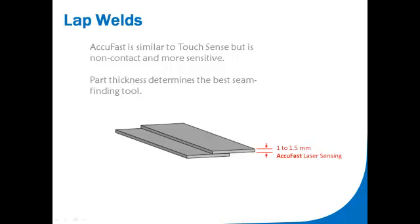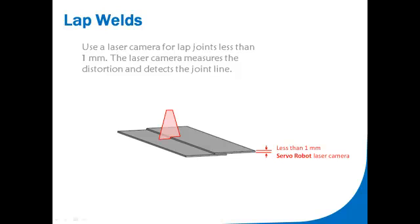AccuFast is used for thinner materials, and the non-contact sensor searches more quickly than TouchSensing. Programming utilizes the same macro jobs as TouchSensing. Laser cameras find lap joints on very thin parts and provide joint gap data.